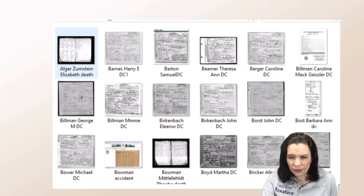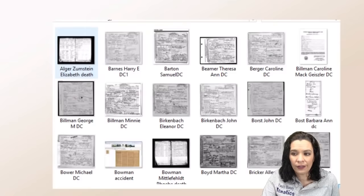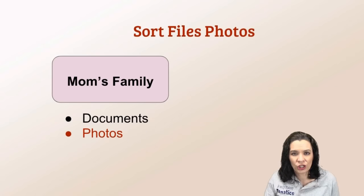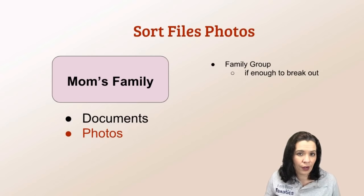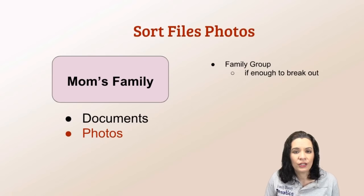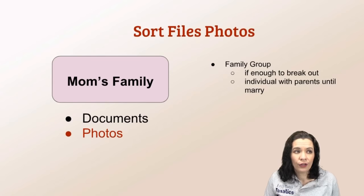Within the folder, I show you all of the images — these are death certificates — and as you can see I have the last name, the first name, and then DC for death certificate. With photos, my process is a little different. Because I don't have a huge collection, I group things by family if there are enough photos to warrant their own folder. So I have a lot of photos from my parents, so they get a family folder. But if I have only 10 pictures of Marvins, I'm not going to create separate subfolders — I'll just create one Marvin folder.